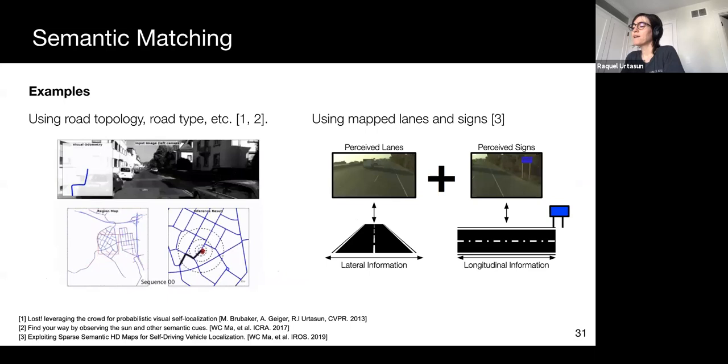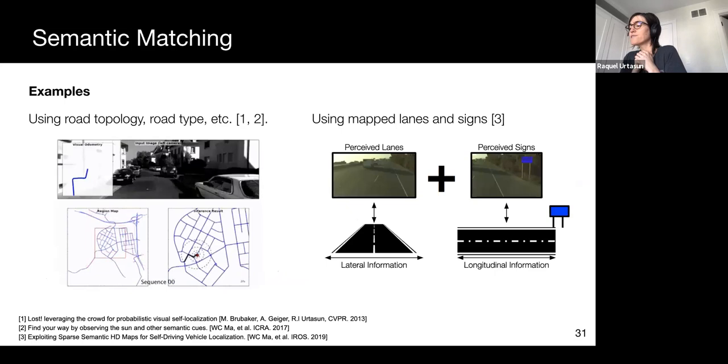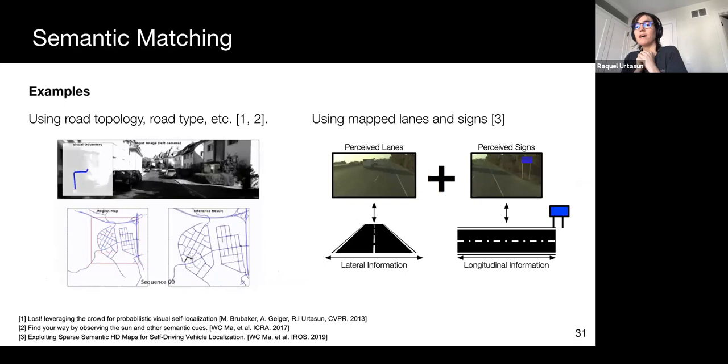Examples of these approaches include LOST, which requires an OSM or OpenStreetMap vector map, and our recent work which exploits lanes and signs for localizing on highways, which can actually automatically create these HD maps and then localize with them.